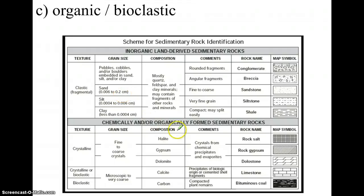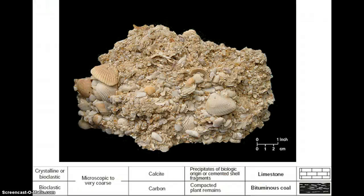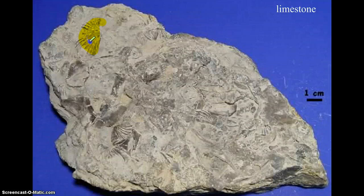The final type of sedimentary rock is formed organically — from living things — and we describe their texture as bioclastic. Bio means life, clastic means pieces, so bioclastic means pieces of living things. Limestone, which mainly contains calcite, can also form this way — from cemented shell fragments clumped together. Here's a piece of limestone with a bioclastic texture where you can see all the shells, some quite large. Basically, creatures die, their shells clump together, and they turn into limestone.